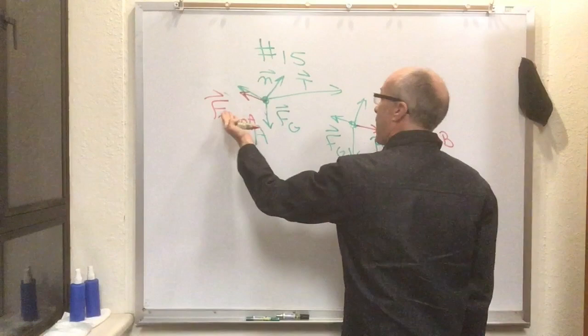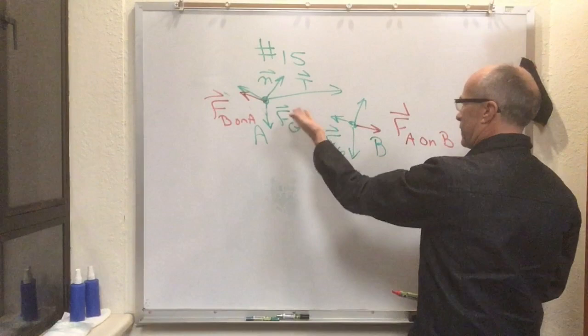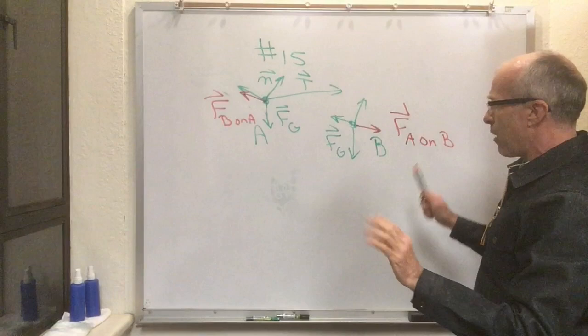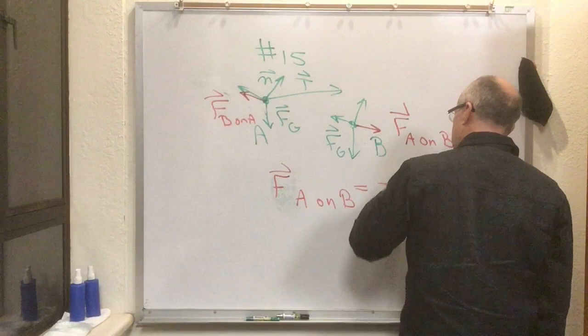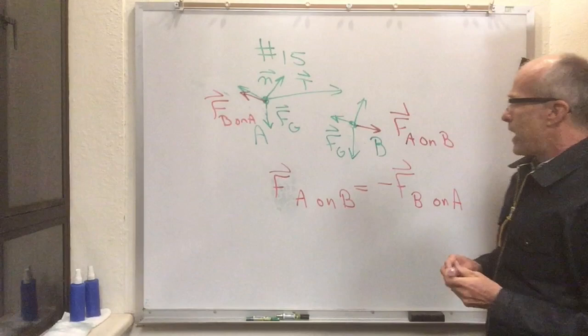And now I'm ready to state Newton's third law. Newton's third law is whatever this is, the force of A on B and the force of B on A, whatever they are, there's something that's always, always, always true, which is that the force of A on B is equal to minus the force of B on A.